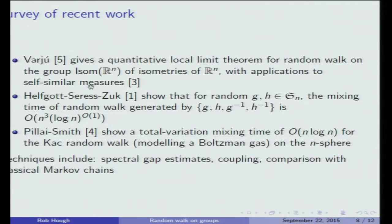This is a somewhat different direction, but I just want to give you a feel for other things that are going on in this field. It's a pretty active area of research right now. Just a couple years ago, Peter Varju gave a local limit theorem for random walk on the group of isometries of R^n. The limit theorem is in the action space, but in any case, it has applications to self-similar measures, which is a generalization of Bernoulli convolutions, which is power series with plus minus one coefficients.